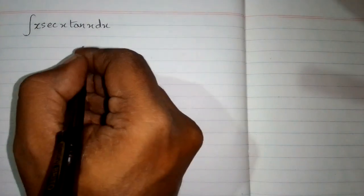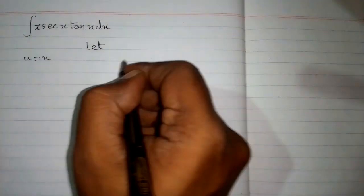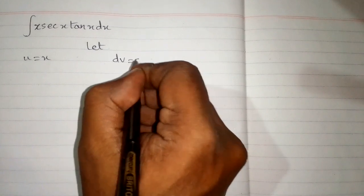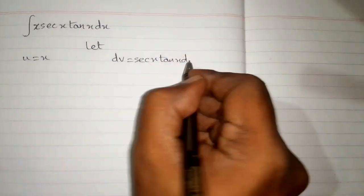In this video, we will find the integral of x times sec x tan x. First, let u equal x and dv equal sec x tan x dx.